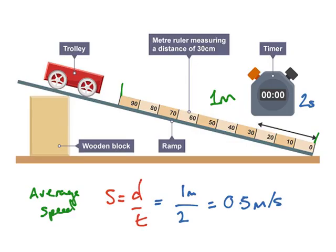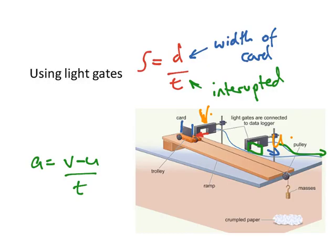Two practical ways to measure speed: you can put two marks on a road, measure the distance, start a stopwatch when the car reaches the first mark, stop it at the second, and do speed equals distance over time. Alternatively, place a light gate on a road — if you know the length of the car and how long it interrupts the light gate, you can work out the car's speed.